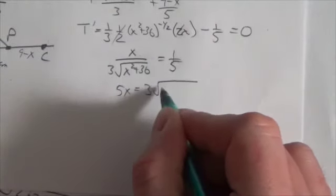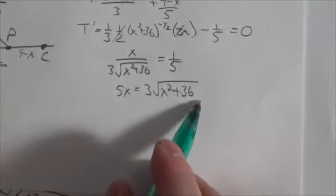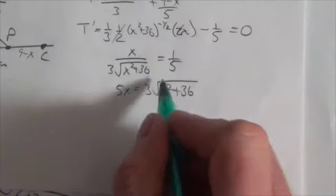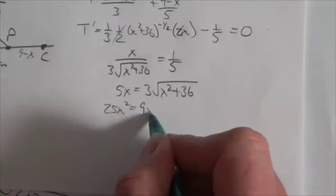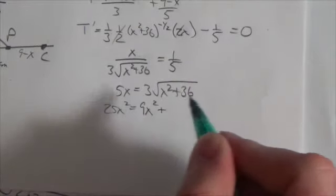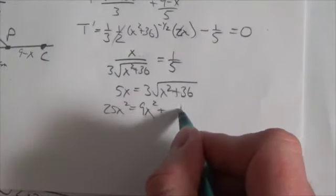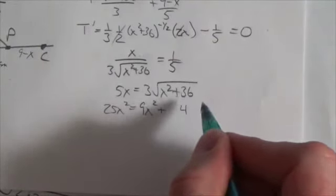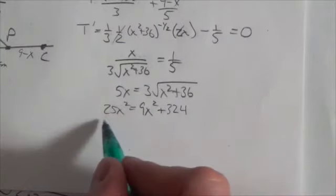I will now square both sides of the equation to get rid of that radical. I'll get 25x squared is equal to 9x squared plus... let's see, 9 times 6 is 54, 9 times 3 is 27, plus that 5 will be 324.